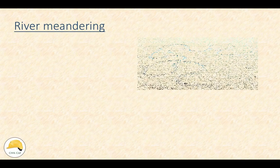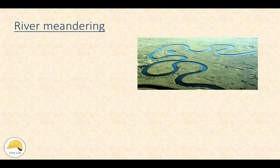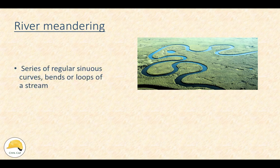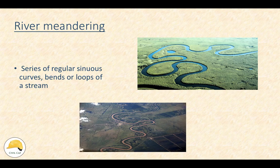What is meandering? There is a river in a sloping ground, but there is an asymmetry in the flow.